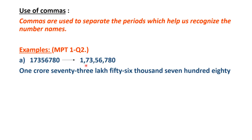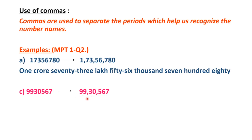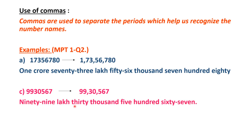Next example: 99,30,567. From the right hand side, count the first three digits (7, 6, 5) and place a comma. Then after each two digits place a comma for the further periods. This number is read as 99 lakh 30,567.